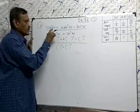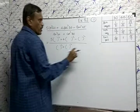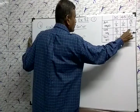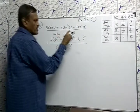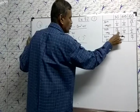Cos 60, equal to 1 by 2. Tan 45, equal to 1. Sin 30, equal to 1 by 2.